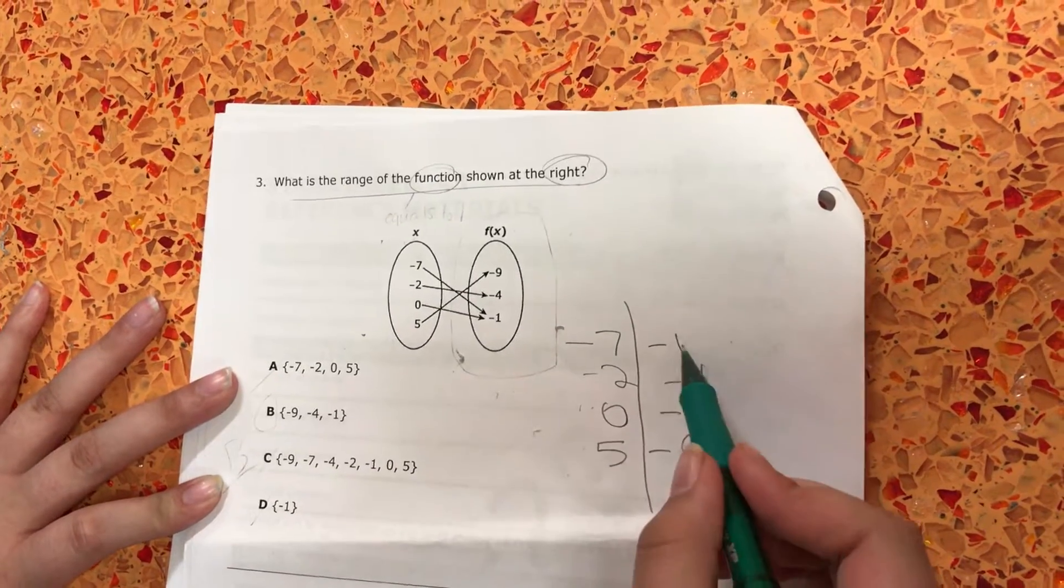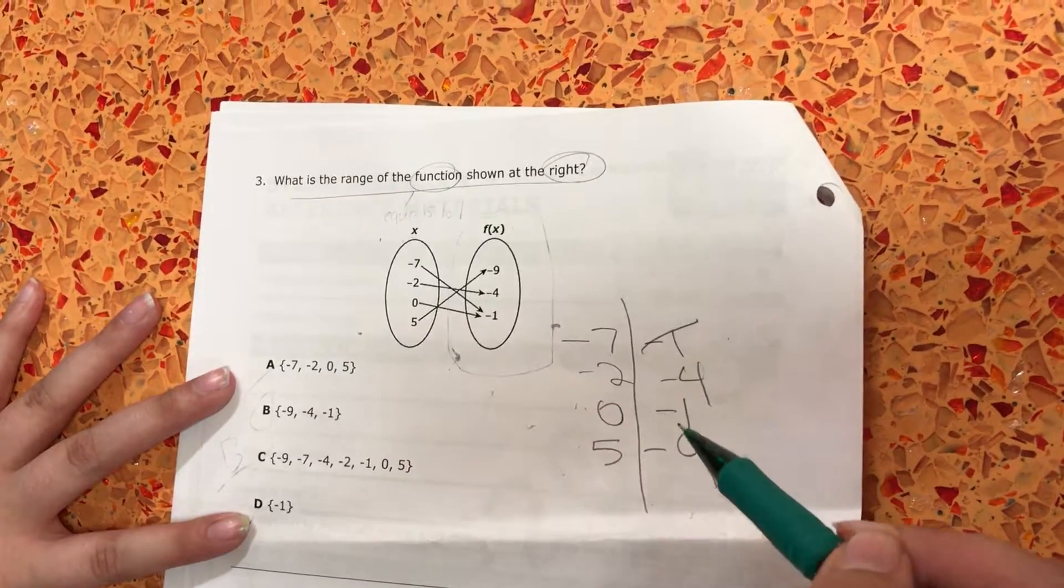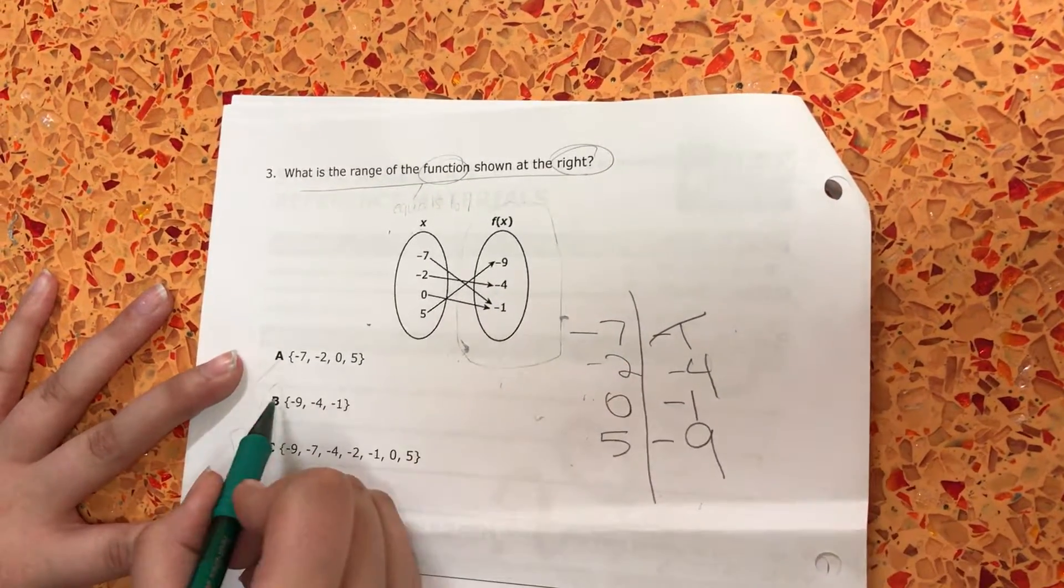And since they're repeated, you only count it once. So it's 9, 4, and 1, and b is your answer.